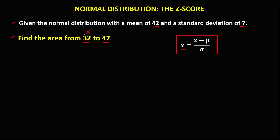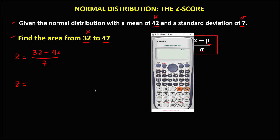For x = 32, we have Z equals X minus the mean, divided by the standard deviation. So Z equals 32 minus 42, divided by 7. That gives us negative 1.43.